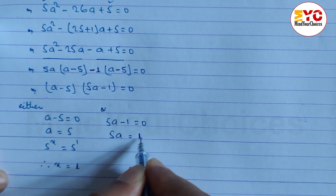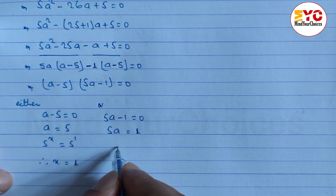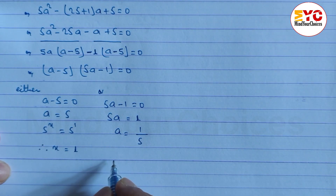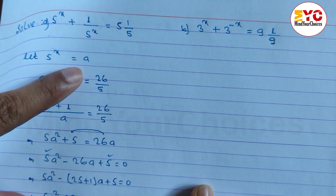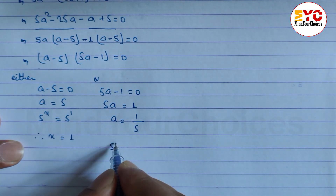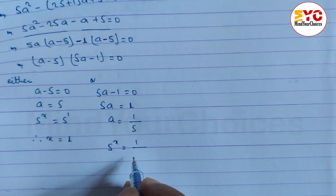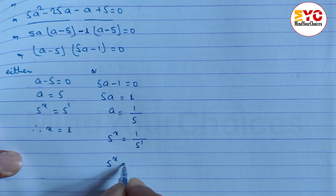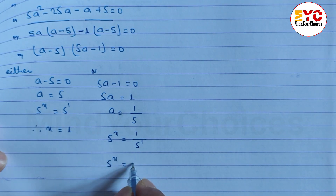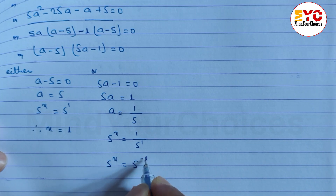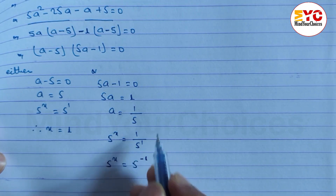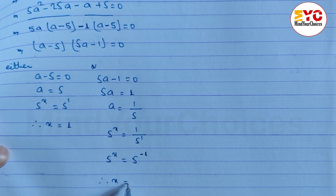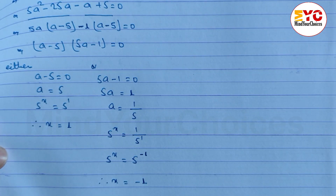Or 5a minus 1 equals 0, so 5a equals 1, giving a equals 1 divided by 5. Substituting back: 5 power x equals 1/5. We can write 1/5 as 5 power minus 1. Base is the same, so power must be equal: x equals minus 1. Please like and subscribe.